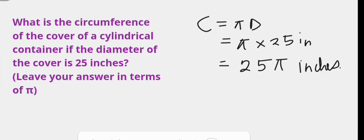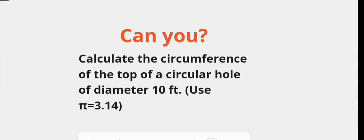I believe you have learned the different ways by which we can calculate the circumference of a circle. Please take this exercise: calculate the circumference of the top of a circular hole of diameter 10 feet, using pi as 3.14. Don't forget to like this video, share it, and if you are yet to subscribe to this channel, it is time to do so. Click on the notification bell so that you do not miss out on any updates. Thank you for watching — bye!